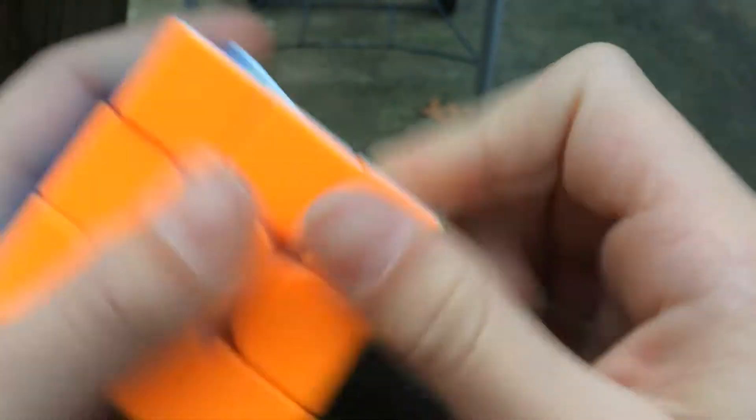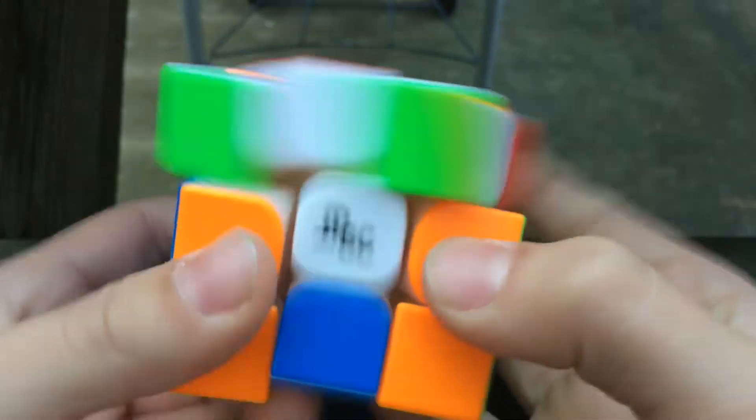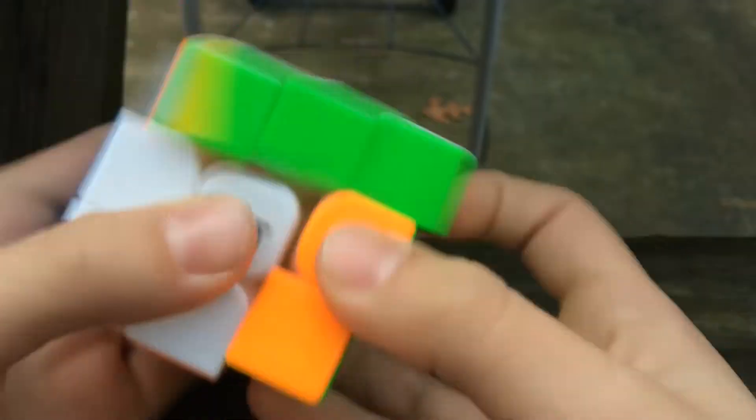It does not corner twist at all, and it's actually pretty hard to corner twist. I did lube it with some candy cane on the pieces and cube depot slick on the core. So yeah, it's pretty controllable.